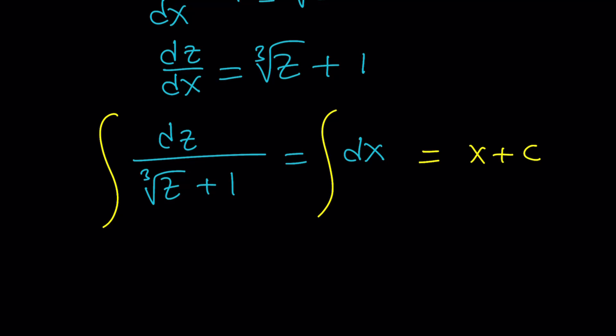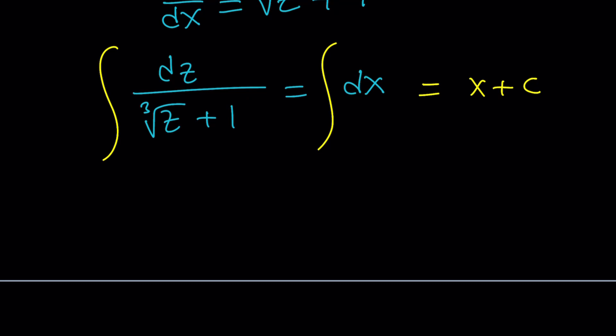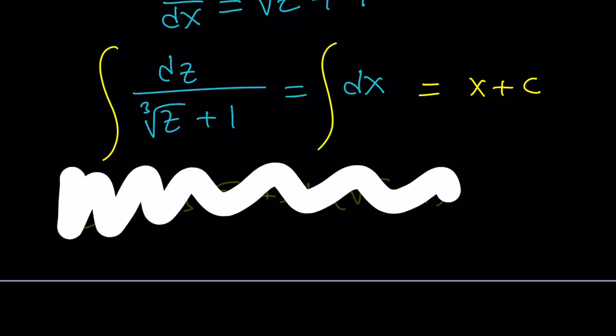The right-hand side is fairly easy. It's just going to be x plus c with a constant. Well, what about the left-hand side? It's not that easy, is it? Would you know when you integrate something like this, the answer would be 3/2 the cube root of z squared minus 3 times the cube root of z plus 3 times ln the cube root of z plus 1. You probably wouldn't know this, right?